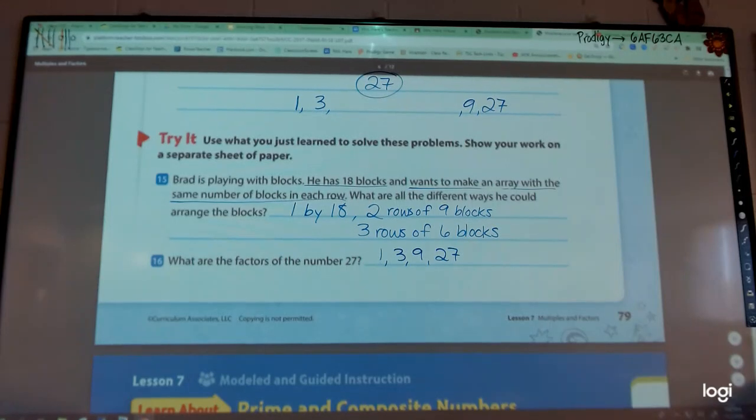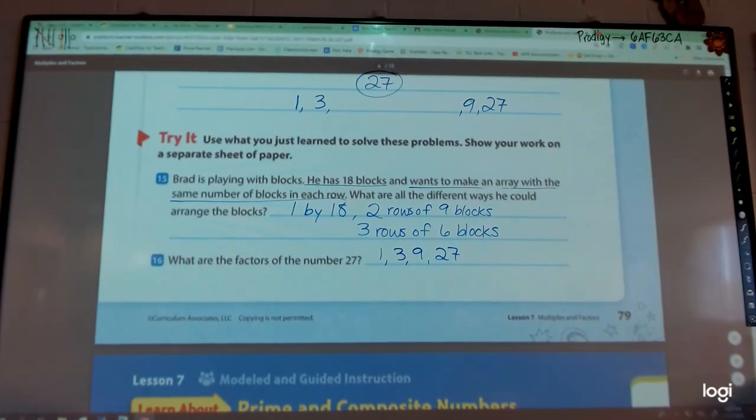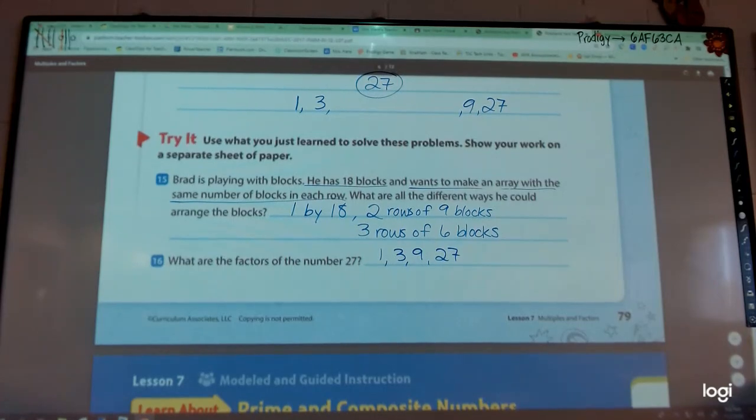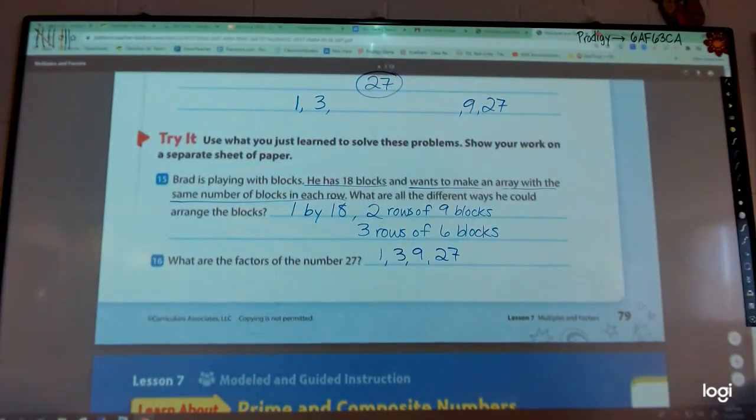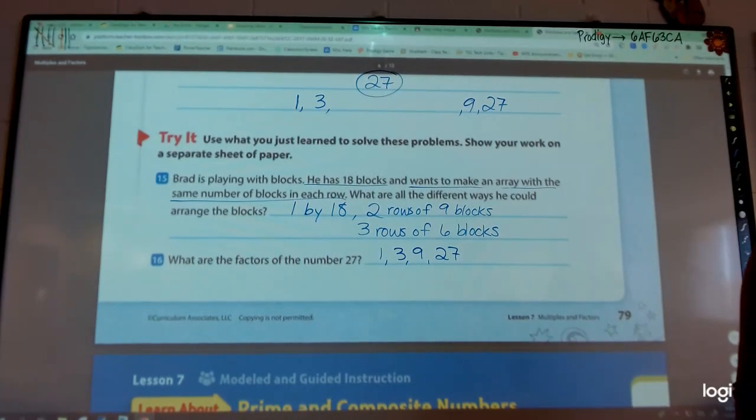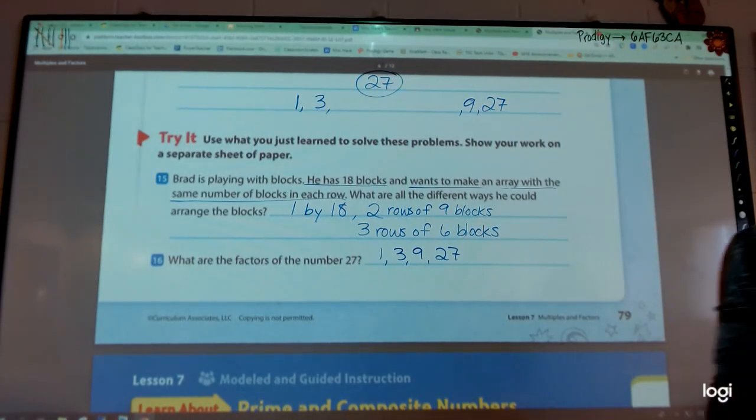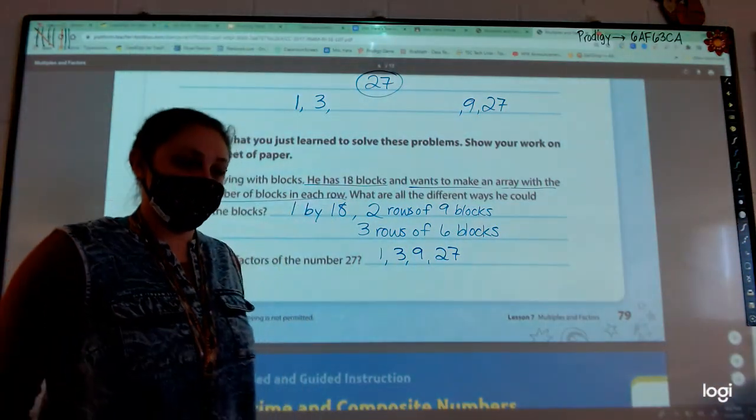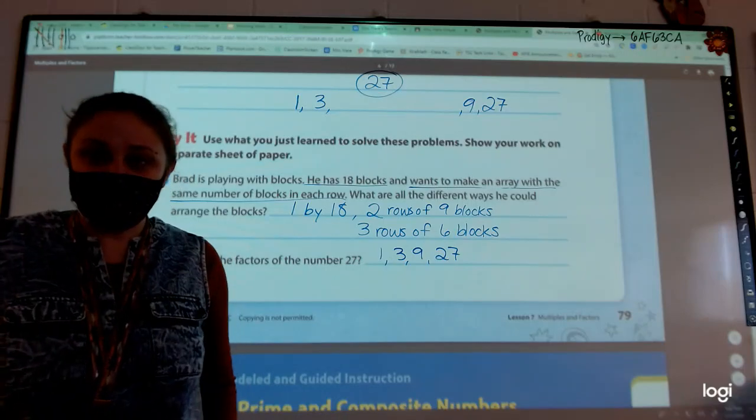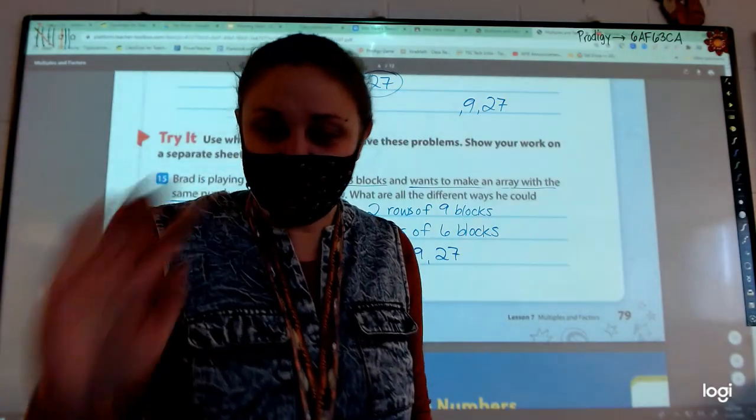So some numbers have lots of factors. Numbers like 24 and 30, those numbers have a lot of factors. Other numbers don't have so many. We will keep working on this. Remember, always start with one and then move on up the number line until you meet in the middle. All right, friends at home, we will continue to work on factors. I will see you soon.